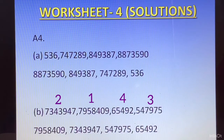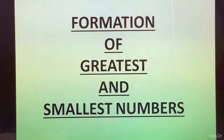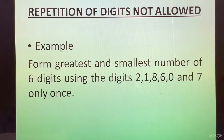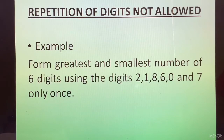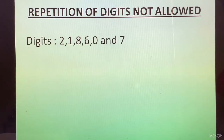This brings us to the end of the solutions. Now let us see the formation of greatest and smallest numbers. Formation of the greatest and smallest number can be done in two ways: where repetition is allowed, and where repetition is not allowed. Let us first look at an example where repetition is not allowed. Form the greatest and the smallest 6-digit number using digits 2, 1, 8, 6, 0, and 7 — only once each.